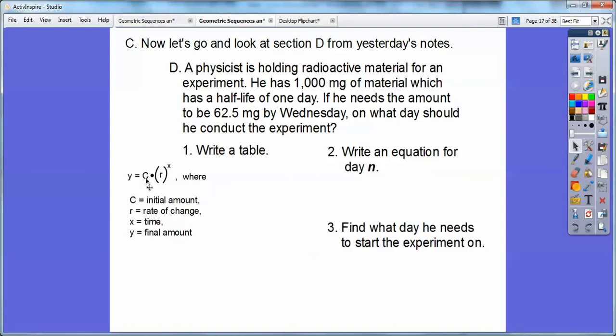He has 1,000 milligrams. So that's going to be this C right here. So I'm going to put 1,000 right here, which has a half-life. Well, my half-life is this thing, my rate of change. So it's taken, it's going down by a half. So this is going to be 1 half right here. A half-life of one day. So my X is going to be time, for how many days it's going to be. So N days, and they told us to put N days. So this is going to be N right here.